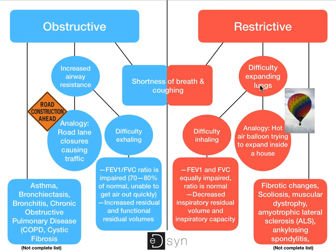While in a restrictive disease, the analogy is trying to expand a hot air balloon inside a house — once you've hit the walls, you cannot expand any further. That's the same with a restrictive lung disease, which usually is a disease in which the lungs have become stiffer, so it's difficult to inhale breath because the lungs are not expanding. Typical obstructive lung diseases are asthma and COPD, and a typical restrictive lung disease is lung fibrosis.